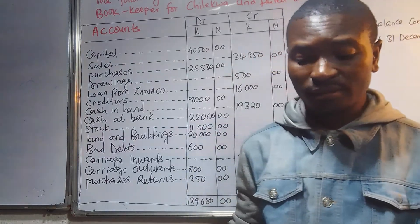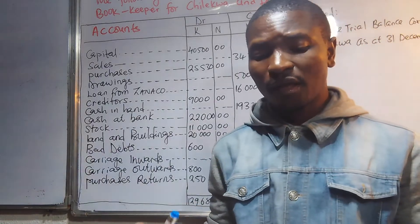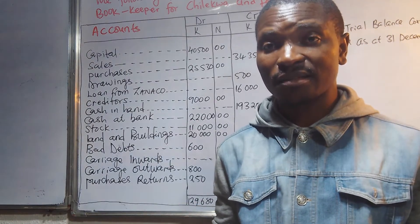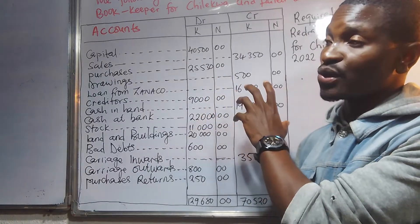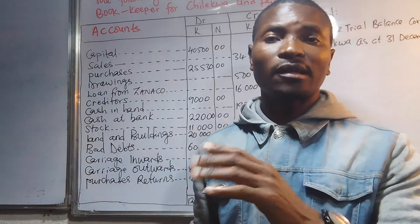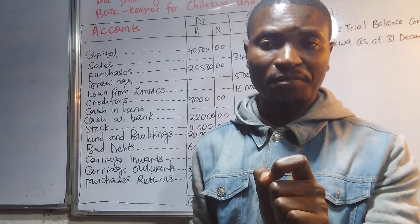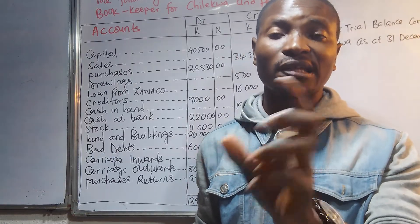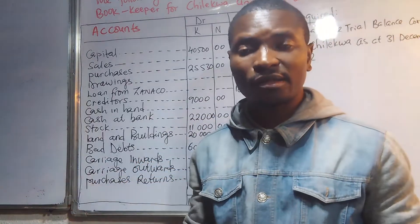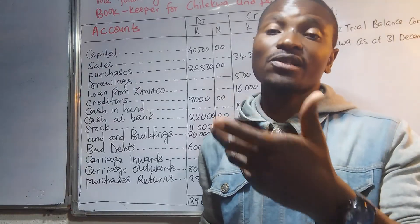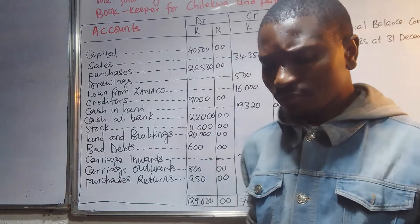The question states that the following trial balance was prepared by an inexperienced bookkeeper for Chilekwa and failed to balance. The trial balance is not an account — it is simply a way of verifying whether double entry was done correctly, since we might undercast or overcast a particular item.